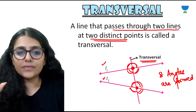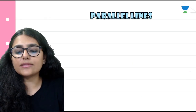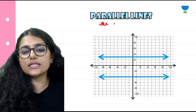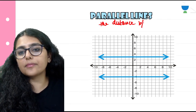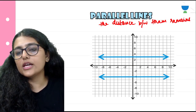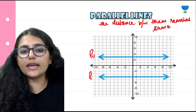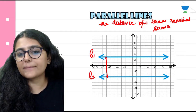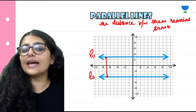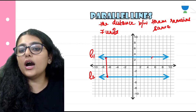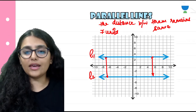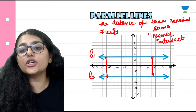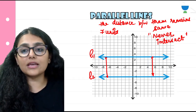Now let's see what parallel lines are. These are lines where the distance between them always remains the same. If the distance between them is always same — say 7 units — it means they will never intersect. So parallel lines are two lines where the distance between them remains the same and they never intersect at any point.